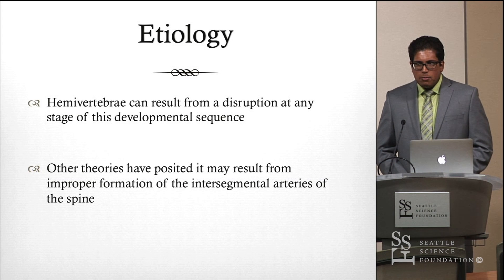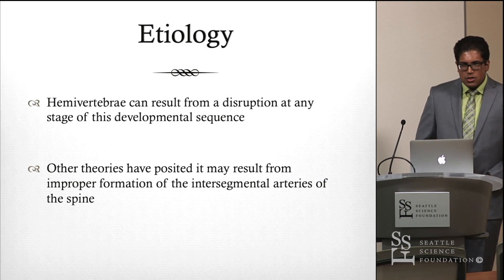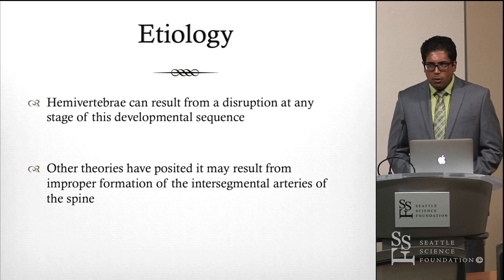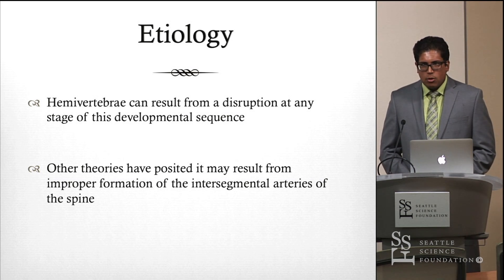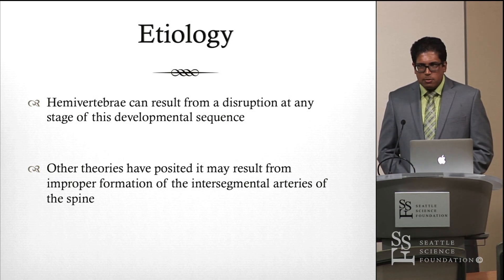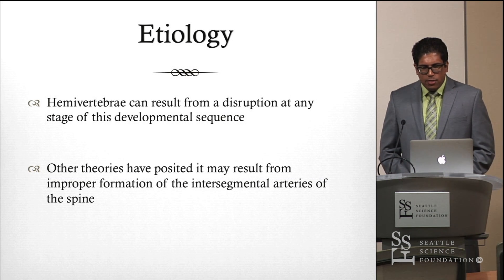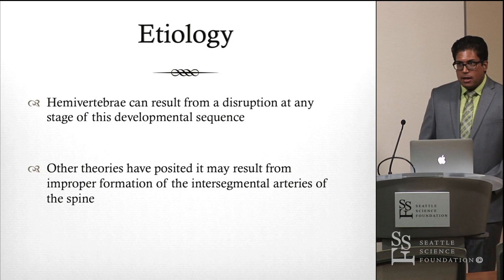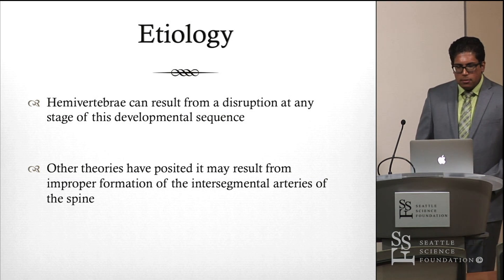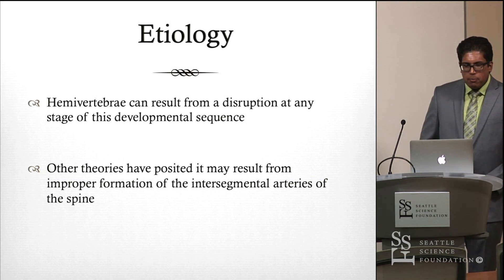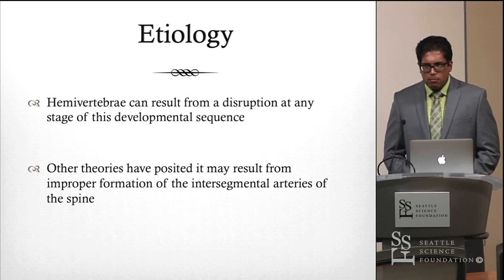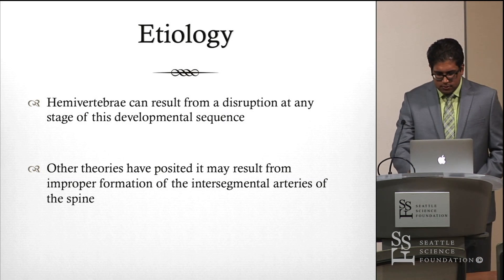There were some non-traditional or novel etiologies suggested for hemivertebra in the literature, but most agree that it is a developmental disorder. One theory suggested it might be due to a lack of blood supply to the vertebral columns — specifically improper formation of the intersegmental arteries — but it is widely accepted that hemivertebra is a developmental disorder.